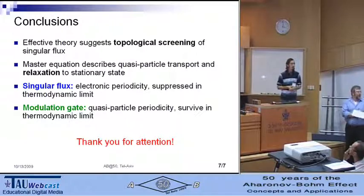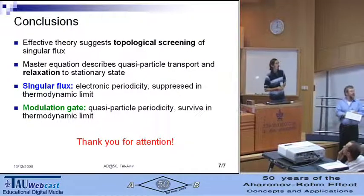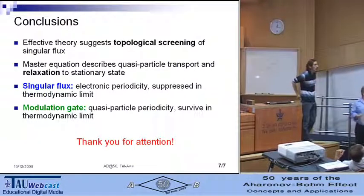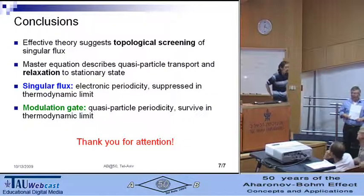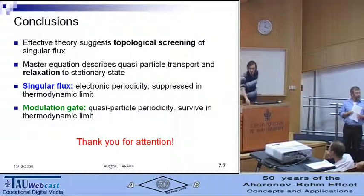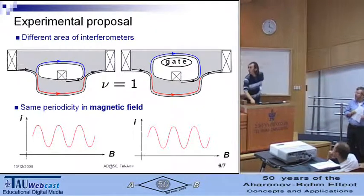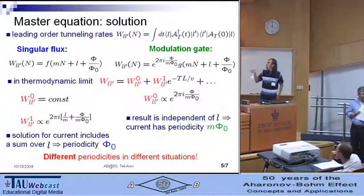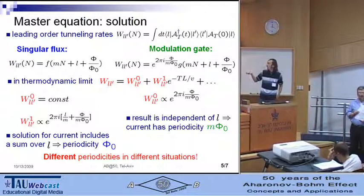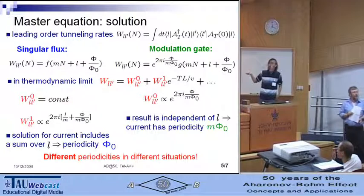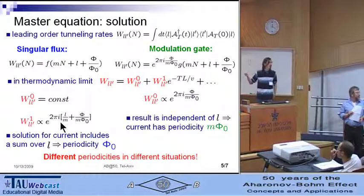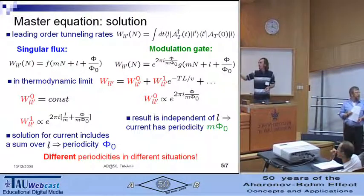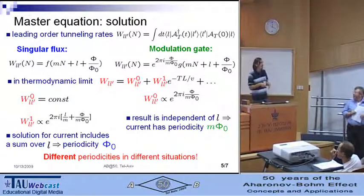Thank you very much. Maybe we have time for one short question. Is there an alternative way to obtain the result by taking into account the fractional statistical phase between quasiparticles? But you see here we have different results for the singular flux and the modulation gate because this effect about what you just said is due to this factor. You see that this factor is exactly the effect of the increase of the number of quasiparticles inside the interferometer. But it is suppressed in thermodynamic limit and seen only in singular flux.